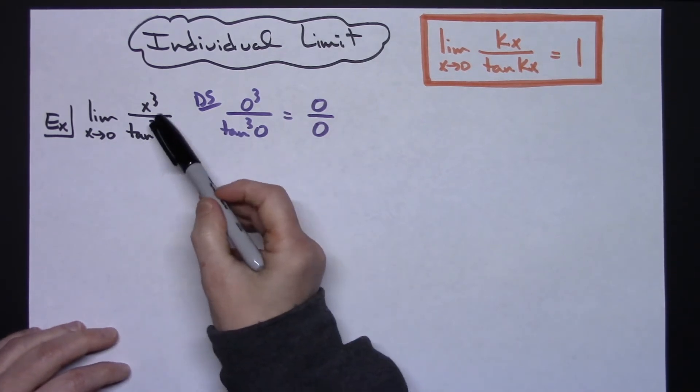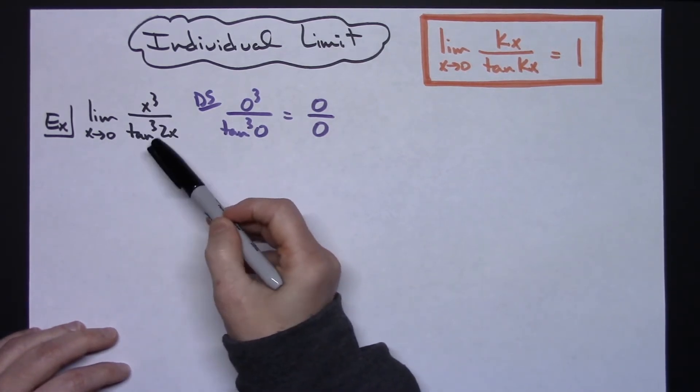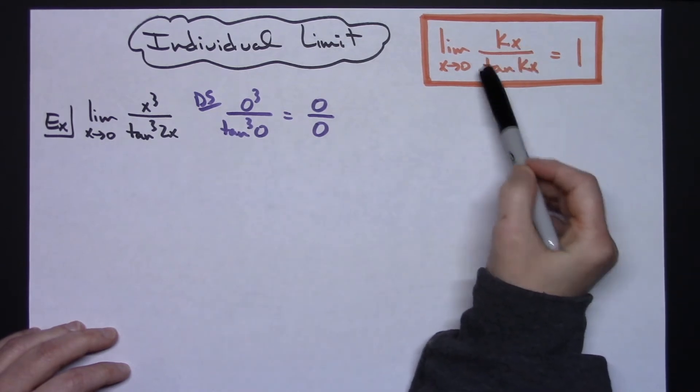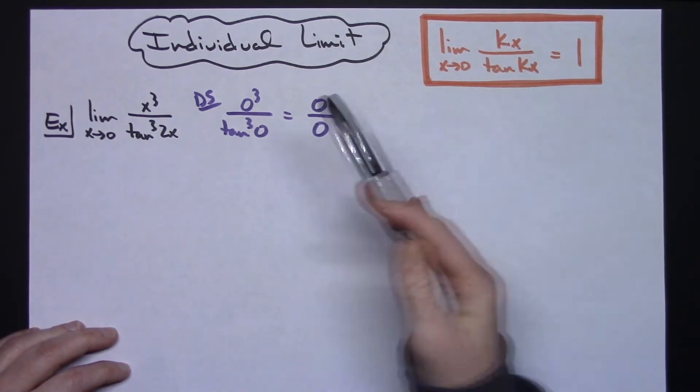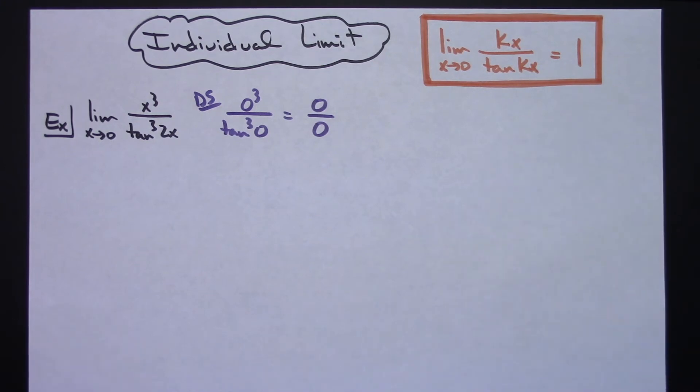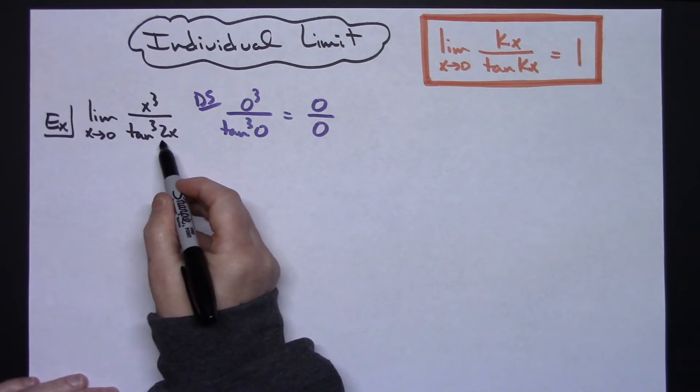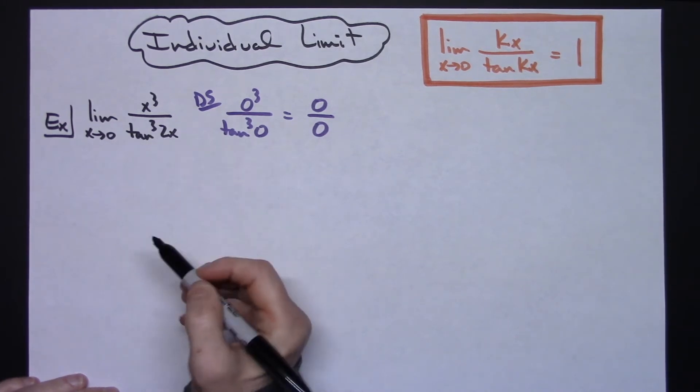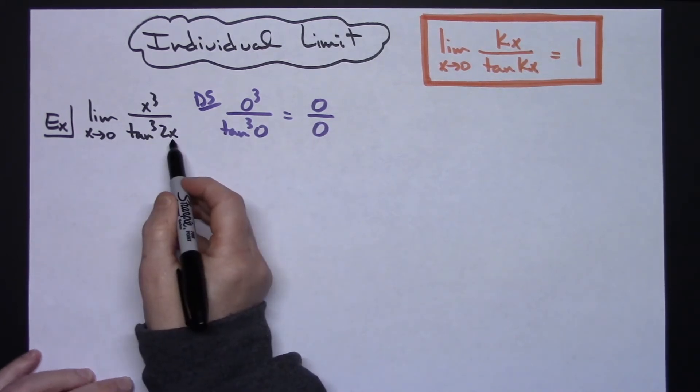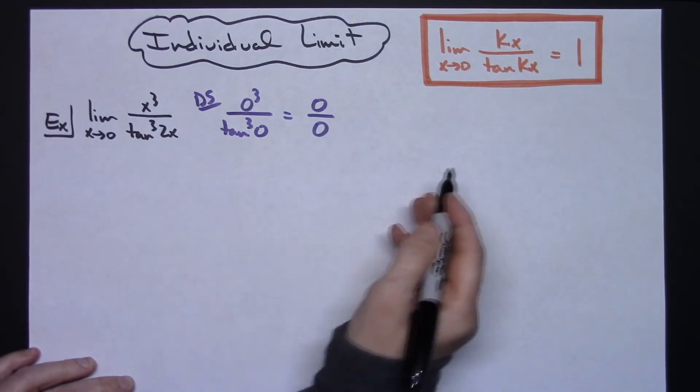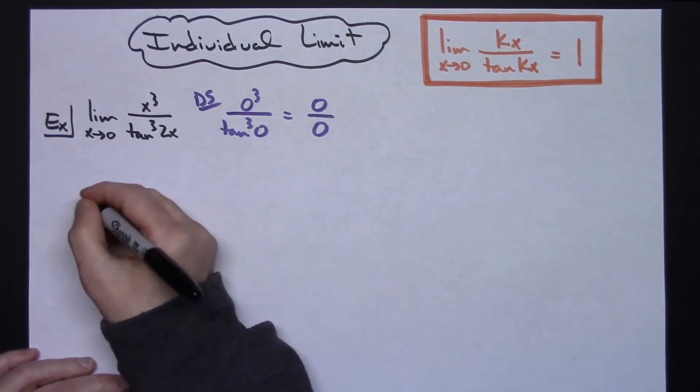So now what I'm going to do is algebraically manipulate this so that I get this quantity so that I can very easily calculate this limit. Now we do have an x to the third in the top and we've got this tangent of 2x raised to that third power, so I've got three of those as well. So I'm going to break this limit up into three individual fractions that are being multiplied together.